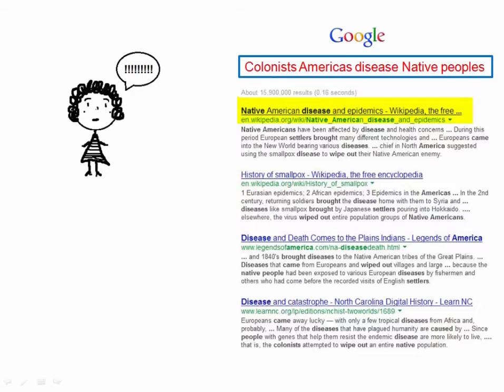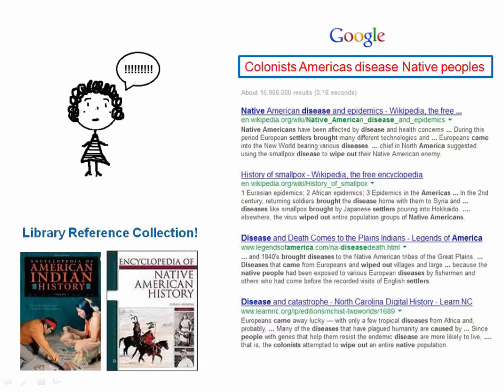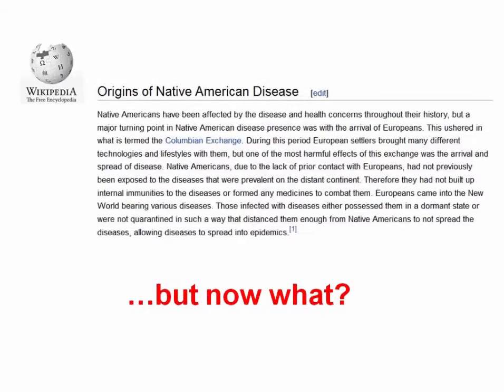Wikipedia is collaboratively written by regular people like you and me, and based on the concept of a traditional encyclopedia. If your instructor is like most instructors, you can't cite a Wikipedia article — it is not a scholarly source. But you can begin to learn more about your topic here. Another similar place to start that you can cite is your library's reference collection, especially the subject encyclopedias. For the purposes of this tutorial, I will use the Wikipedia article.